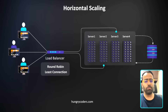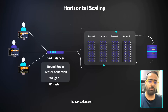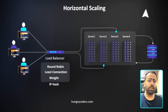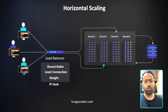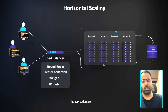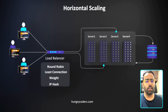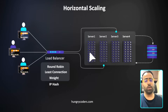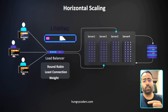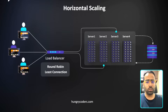Both round robin and least connection can be combined with weighting based on server configuration. If one server is double the size, it should handle double the requests. There's also IP hash, mostly used for online gaming to preserve user experience — a user coming from the same IP always gets routed to the same server, which is why disconnected games reconnect instantly.